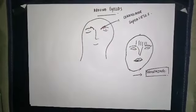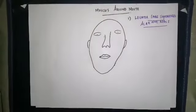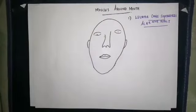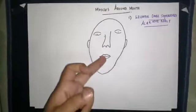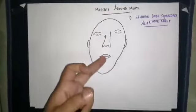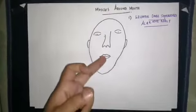Now we discuss muscles around the mouth, including elevators and depressors of the upper and lower lips. The first muscle is levator labii superioris alaeque nasi — from the name, it helps in elevation of the lip and is also related to the ala of the nose.